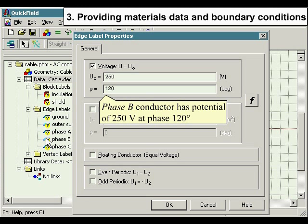Phase A conductor has potential of 250 volts at phase zero degrees. Phase B conductor has potential of 250 volts at phase 120 degrees. Phase C conductor has potential of 250 volts at phase 240 degrees.